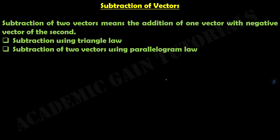Then coming to the next part, which is subtraction of vectors. We know we can add vectors and also we can subtract vectors. Subtraction of two vectors means the addition of one vector with the negative vector of the second — this is the important point.